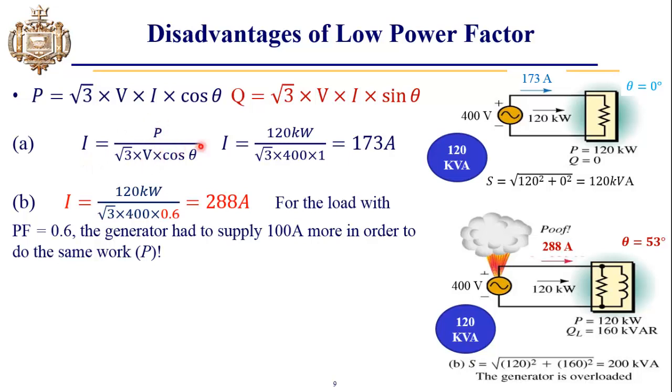For finding the current, we rearrange this formula and putting the values of all the quantities: the load power is equal to 120 kilowatts, voltage is 400, and cos θ is equal to 1. So the total current is 173 amperes, which this load is drawing from this generator. Next we have to compute the active power and the reactive power according to this formula.